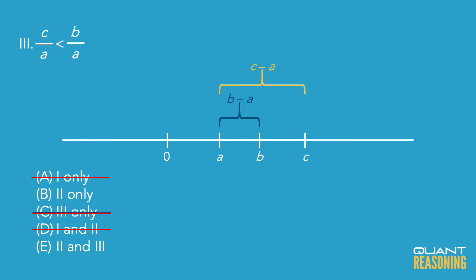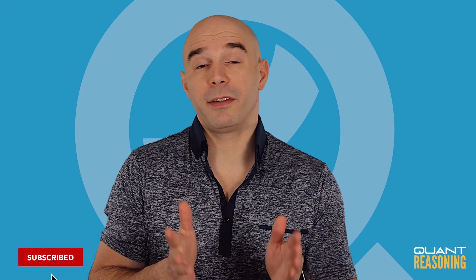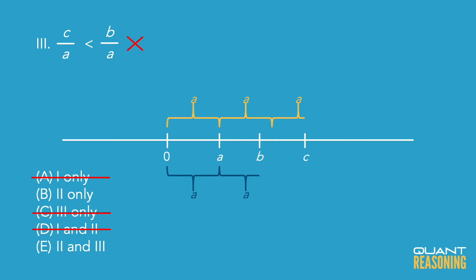How to think about the ratio C over A in the context of a number line? C over A is like how many times could I fit the distance between 0 and A inside the distance between 0 and C? Similarly, B over A means how many times can I fit the distance from 0 to A inside the distance from 0 to B? We know the distance between 0 and C is greater than the distance between 0 and B, so we should be able to fit the distance between 0 and A more times between 0 and C than between 0 and B.